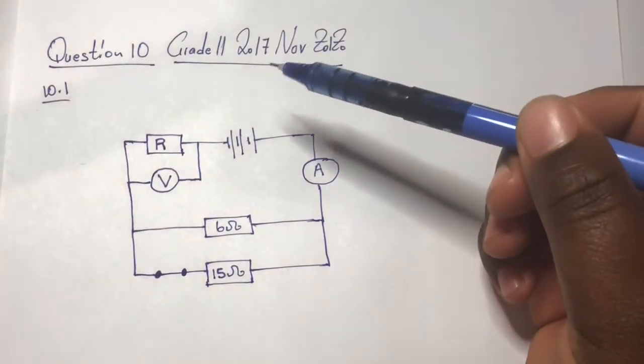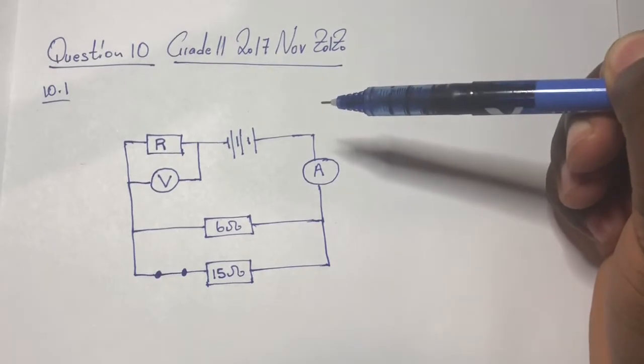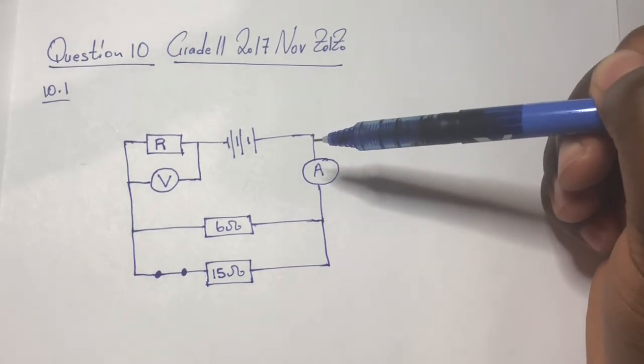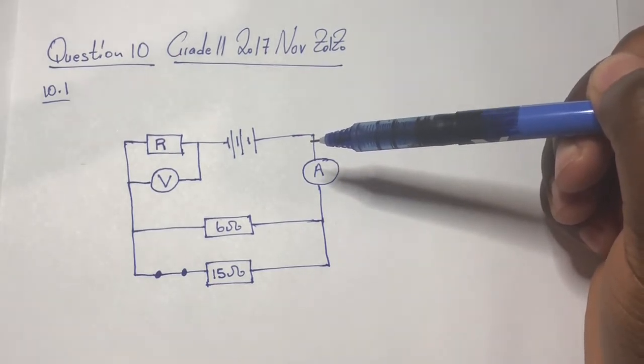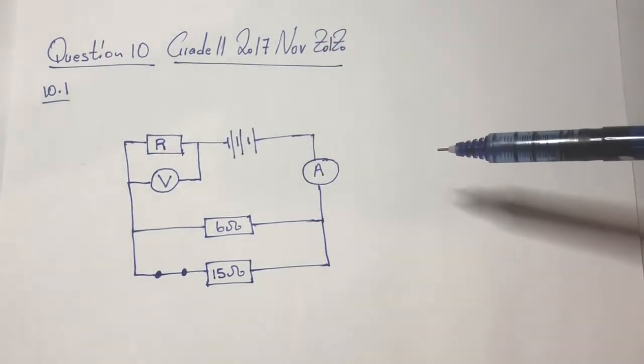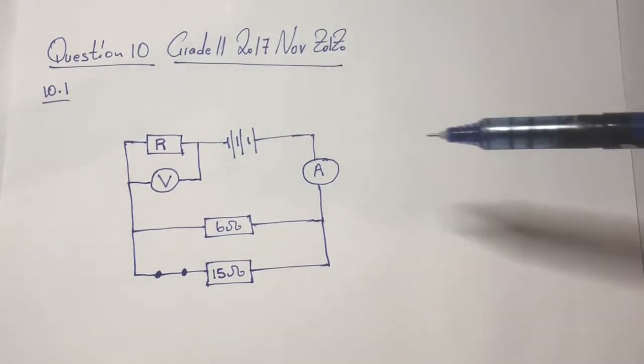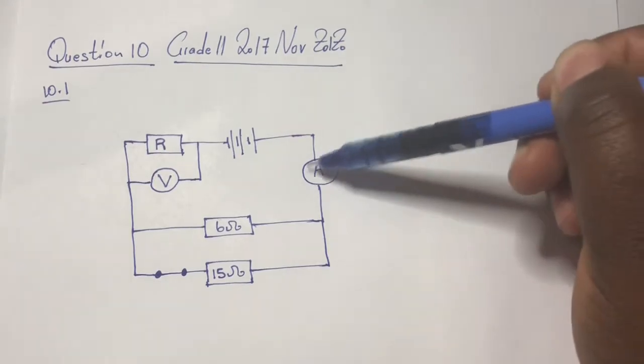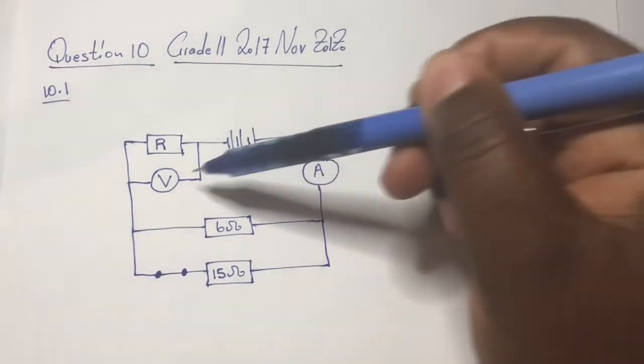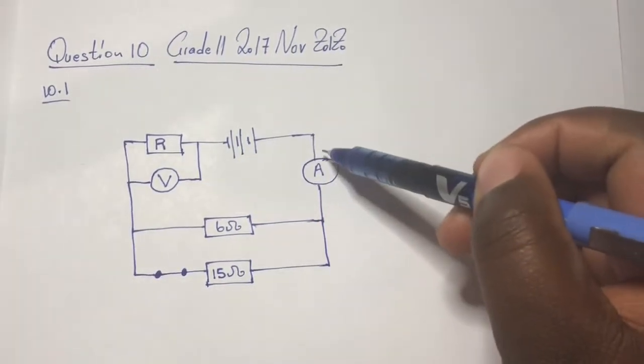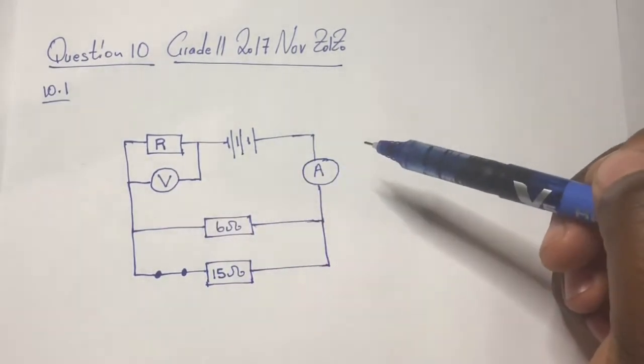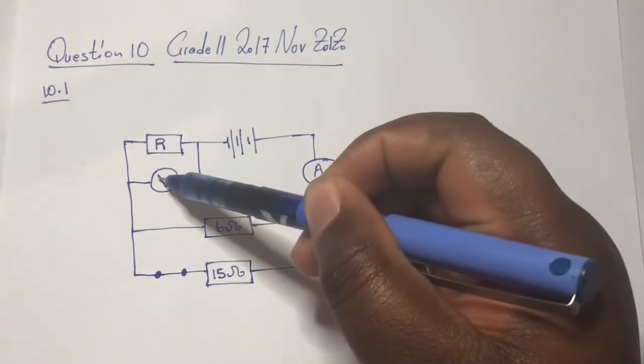Okay, so let's have a look. We've got two types of connections. First thing, you should know that we've got series connection and parallel connection. Normally in most circuits you'll be having an ammeter connected and a voltmeter connected. The ammeter reads the current flowing through the circuit and the voltmeter measures the voltage.